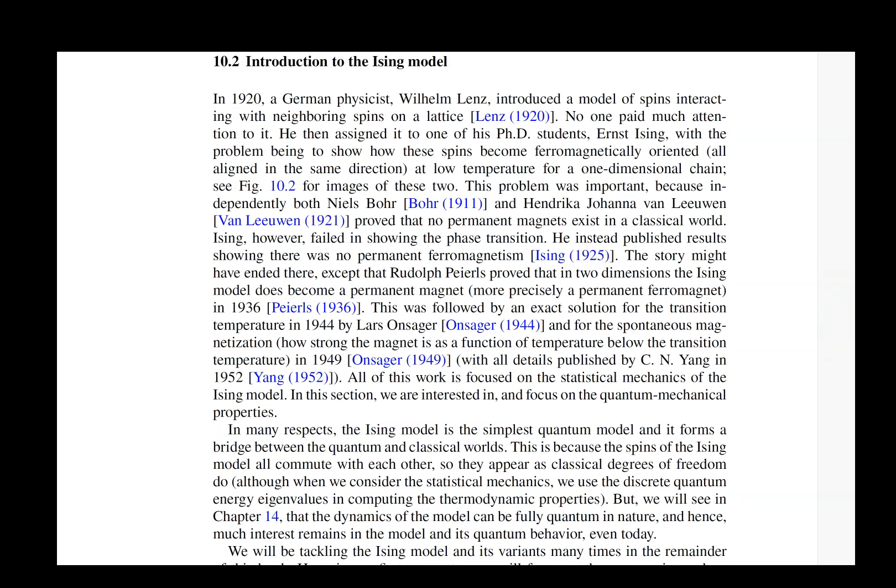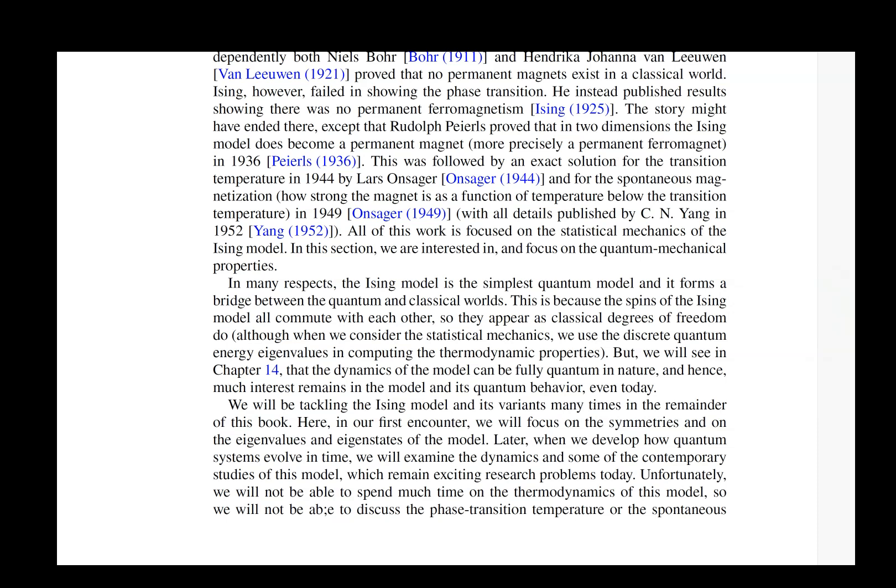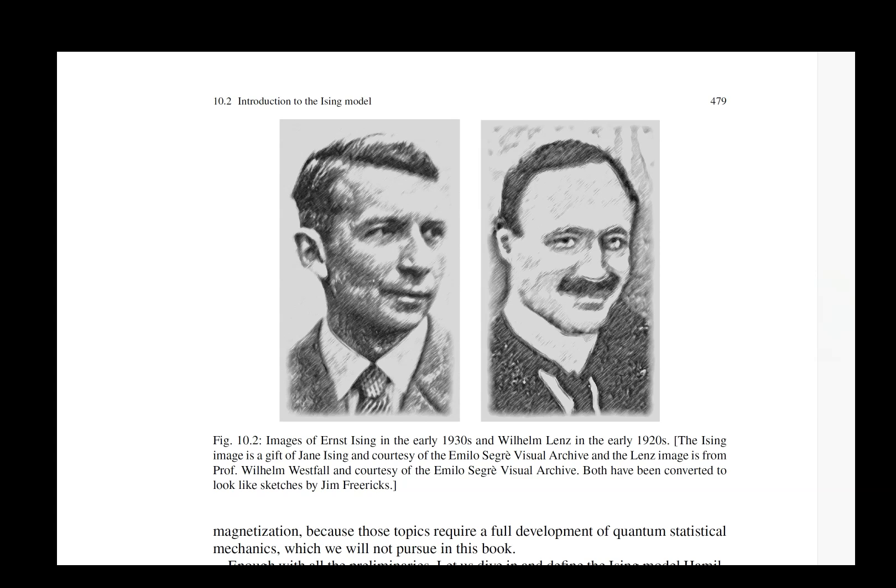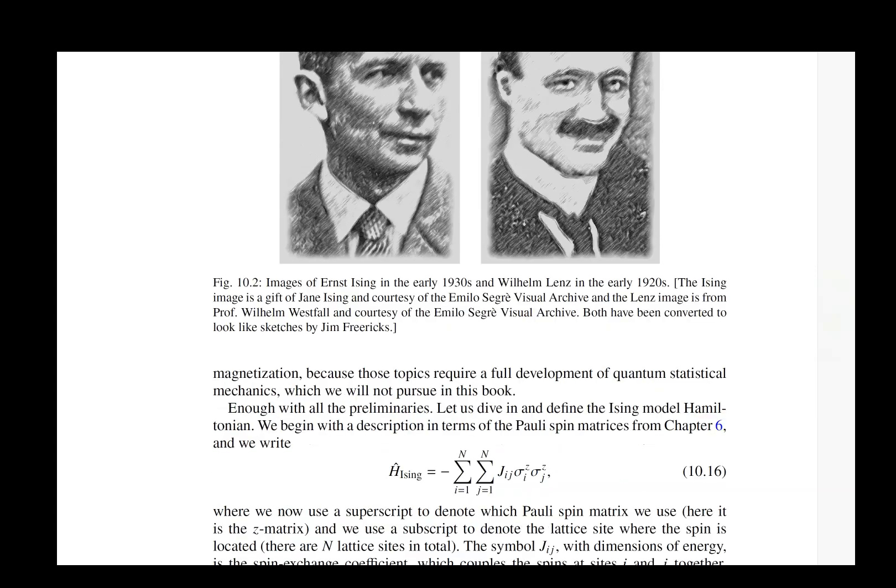Then we work with the Ising model itself. This was a problem that was given by Wilhelm Lenz to his student Ernst Ising. He wanted to use it to study phase transitions. What Ising did was he proved that there's no phase transition for the one-dimensional model. So he must have had some angst when he was doing his PhD that essentially his PhD didn't work out the way that it was supposed to. This is a common thing that can happen in doing research.